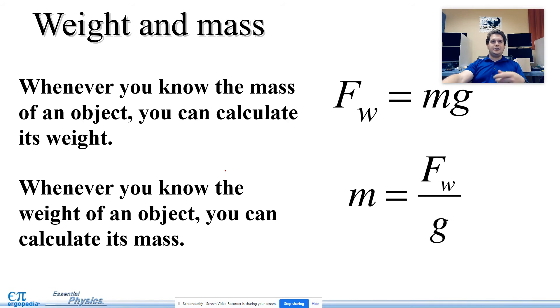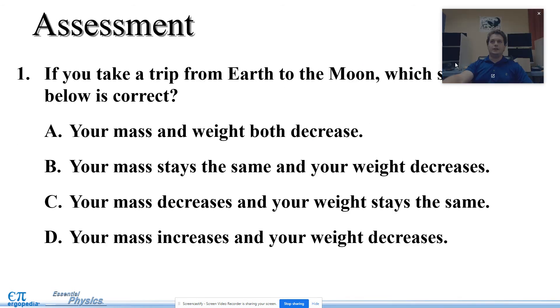Whenever you know the mass of an object, you can calculate its weight. Force of weight equals mass times gravity. Whenever you know the weight of an object, you can calculate its mass. We're just showing you another way to flip around the equations and you can solve for different things. You can find mass based on weight and gravity. You can find force of weight based on mass and gravity. Two different versions of the same equation. Really, as long as you have the first one, this equation, you're pretty good.